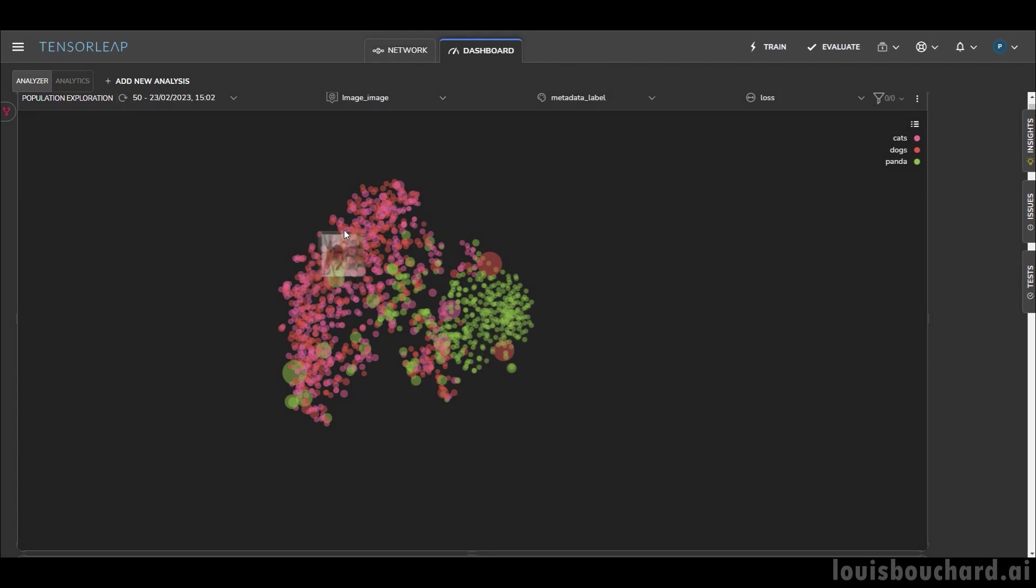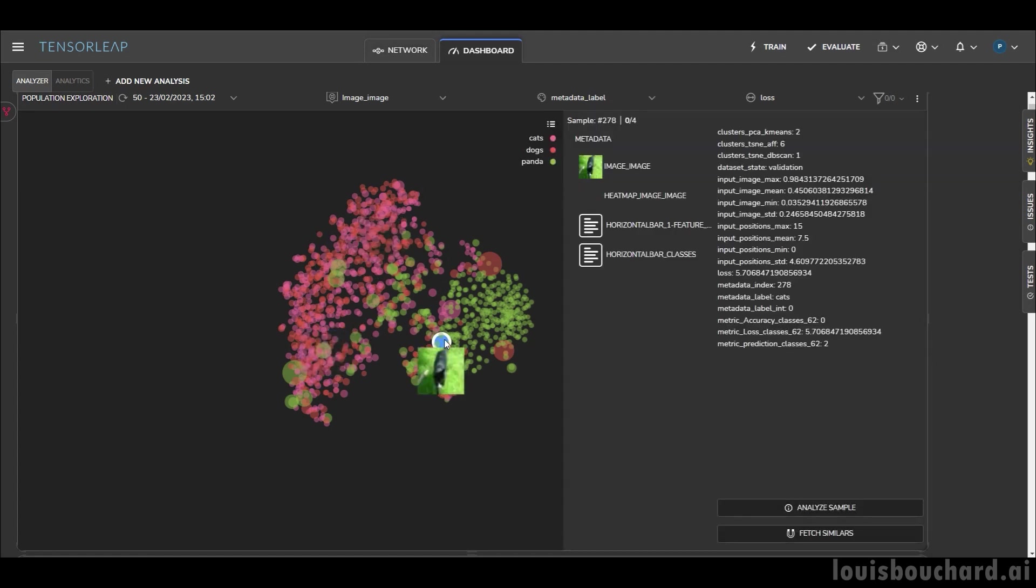We can then easily look into our results. For instance, let's focus on the green points, which represent our images of pandas. We can easily visualize them and their according loss and the same kind of saliency map we discussed to see if there was anything wrong. Just like here, you can see this is clearly not a panda.